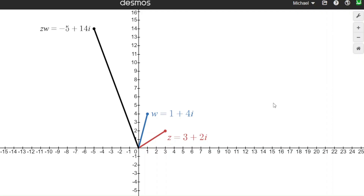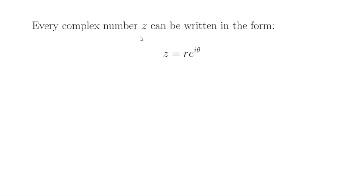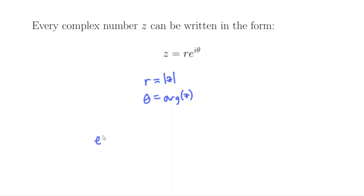So why do complex numbers multiply in this way, and how can we use this to find cube roots? Complex multiplication is easiest to understand using polar form: every complex number z can be written as z equals r times e to the i theta. Here r is the modulus of z — the length of the vector — so if z is a plus bi, then r is the square root of a squared plus b squared. And theta is the argument of z, that angle we were talking about. Note that theta is not unique: you can always add or subtract a multiple of 2pi. Ultimately this comes down to Euler's formula, which says e to the i theta equals cosine theta plus i sine theta.